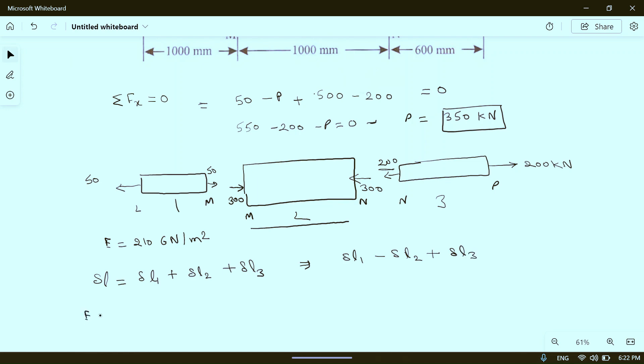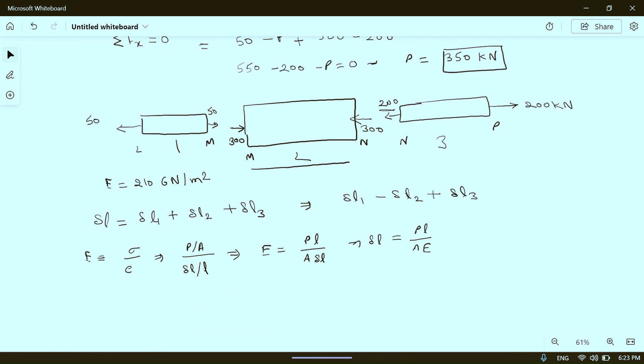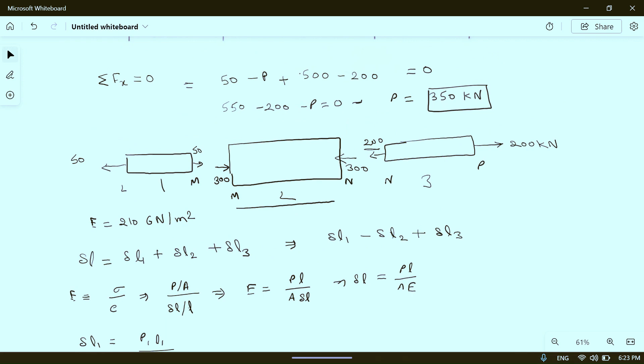From Hooke's law, E equals stress upon strain, which equals P by A divided by delta L upon L. So E equals PL upon A delta L. Therefore delta L equals PL upon AE. We will calculate every delta L for each part. Delta L1 is P1 L1 upon A1 E. E is same for all, so we will not write E1, E2 separately.